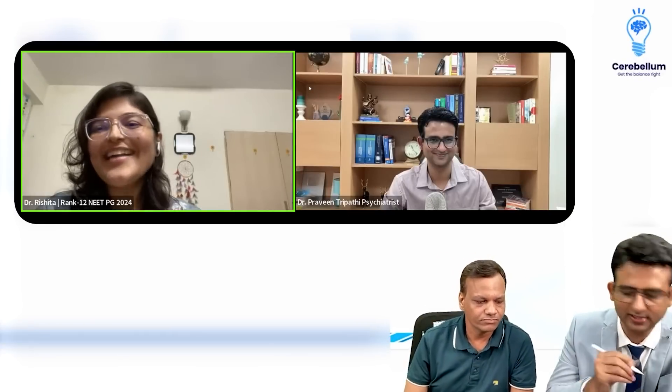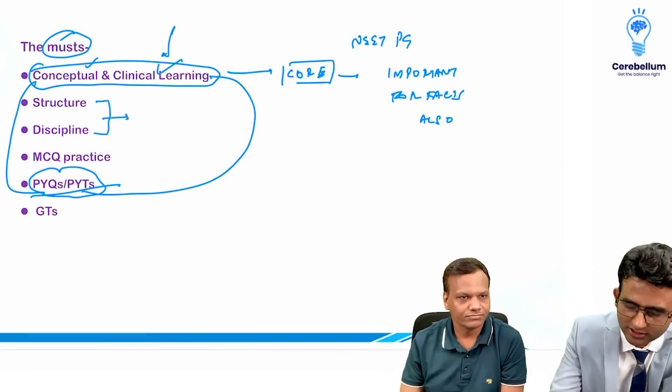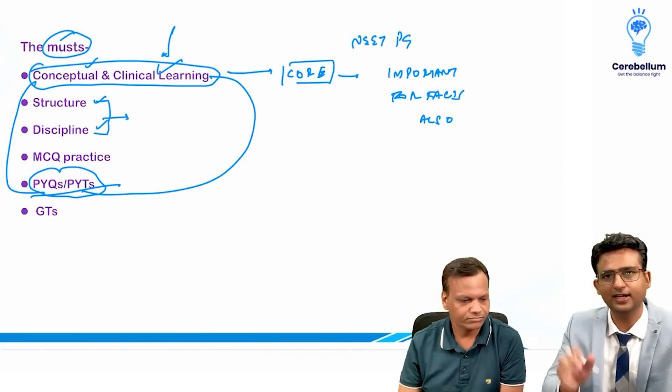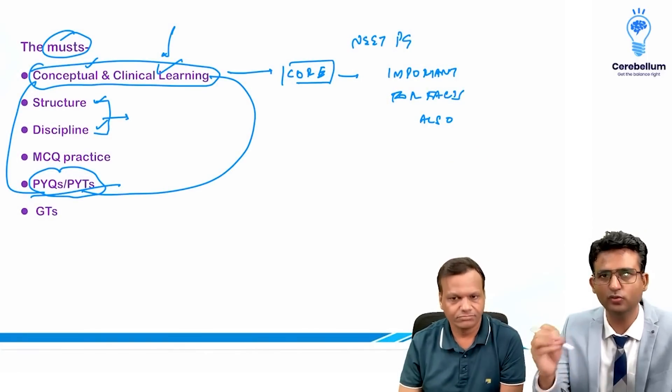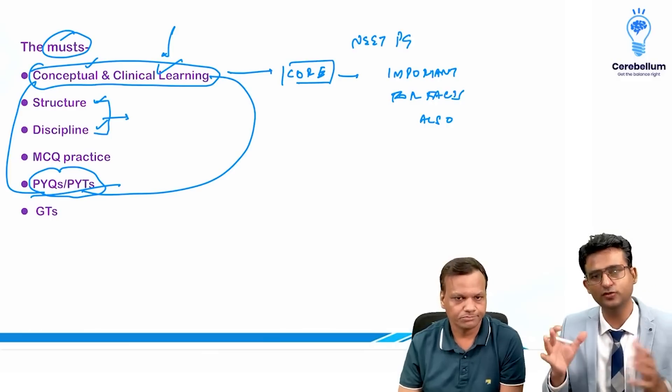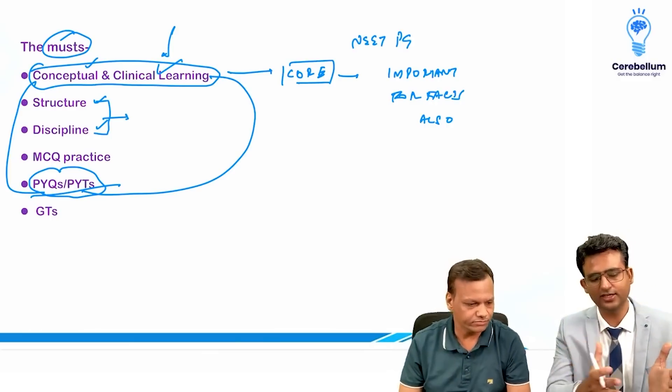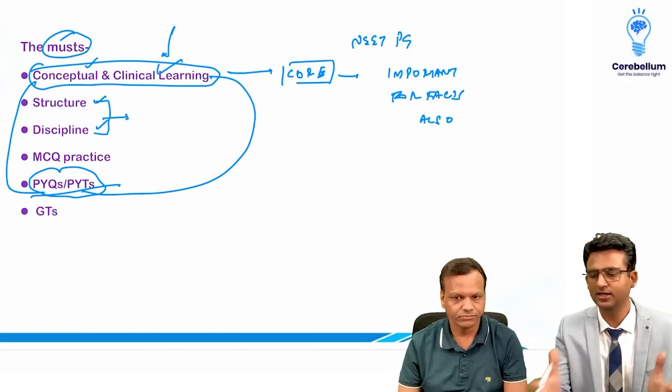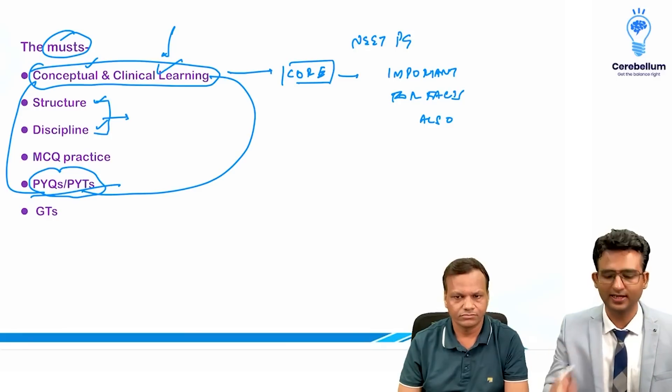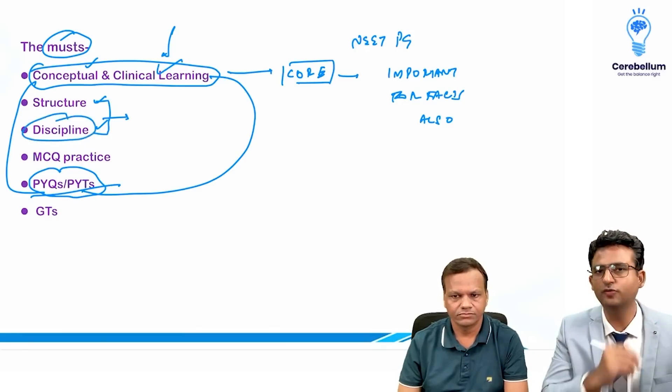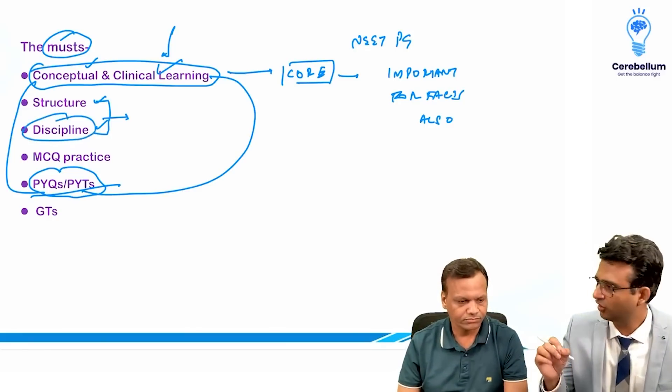Sir, I was talking to Rishita yesterday. She got rank 12. This is what she stressed upon a lot - that I made a structure and I then stuck to that structure. No matter what would happen, I would stuck to that structure and she was very disciplined. She said that I divided my course into three parts, completed the first part on the date when it was decided, and no matter what, did not let go of discipline.